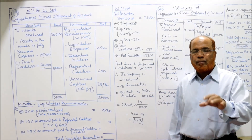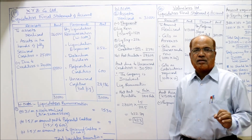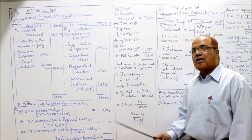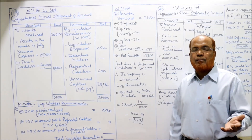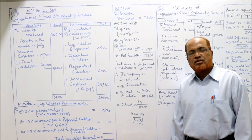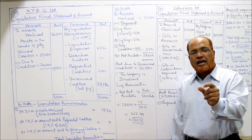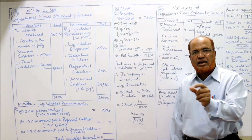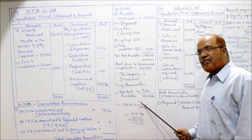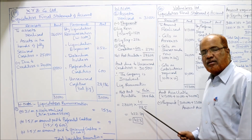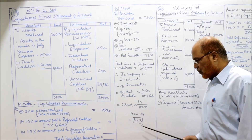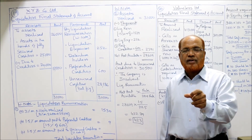Since the company is insolvent, the liquidator's remuneration on amount paid to unsecured creditors is calculated as: net amount available × rate / (100 + rate). Net amount available = 28,609, rate = 1.5%. So 28,609 × 1.5 / 101.5 = 422.79, rounded off to 423. This is the remuneration on amount paid to unsecured creditors.